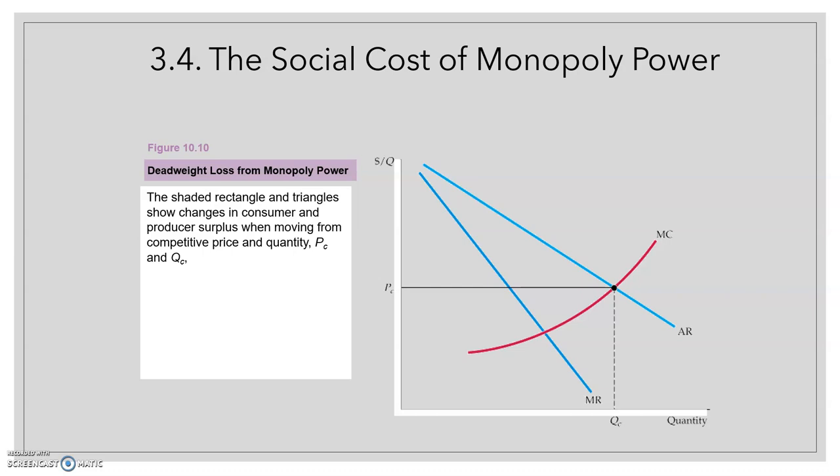For this purpose, we are going to assume that both of them have the same cost curve. In this figure, we can see the average and marginal revenue curves. This is the average revenue, this is the marginal revenue, and the marginal cost here.